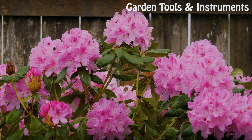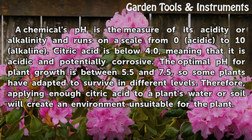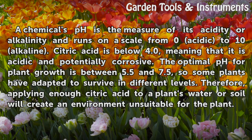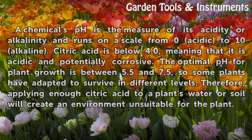Basics. A chemical's pH is the measure of its acidity or alkalinity and runs on a scale from 0 acidic to 10 alkaline. Citric acid is below 4.0, meaning that it is acidic and potentially corrosive. The optimal pH for plant growth is between 5.5 and 7.5, so some plants have adapted to survive in different levels. Therefore, applying enough citric acid to a plant's water or soil will create an environment unsuitable for the plant.